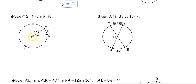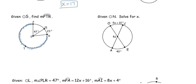Our next problem has a center at S. We want to find the measure of arc PTR. With three letters, that's our arc notation. I follow the path: starting at P, going to T, then going to R. That arc is considered a major arc — if an arc is more than half the circle, it's a major arc; less than half is a minor arc; exactly half is a semicircle.